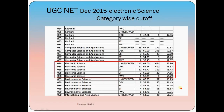Here is the category-wise cut-off list for UGC NET December 2015, particularly highlighted for Electronic Science. You can see that 117 candidates qualified from the General category for UGC NET for Assistant Professor as well as JRF, and the minimum cut-off percentage was 68.00%. Additionally, 664 candidates qualified for Assistant Professor only, with a minimum cut-off of 62.86%. This large number of qualifying candidates indicates that there is a great opportunity to clear the UGC NET exam.